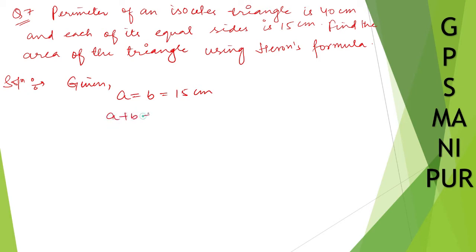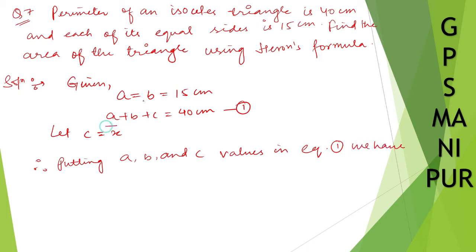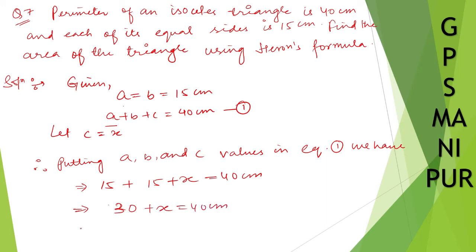So a is equal to b is equal to 15 centimeters. Another given: perimeter of the isosceles triangle is 40 centimeters, so a plus b plus c is equal to 40 centimeters. Let c equal x. Putting the values of a, b, and c: 15 plus 15 plus x equals 40. So 30 plus x equals 40, therefore x equals 40 minus 30, which is equal to 10 centimeters. So c equals 10 centimeters.